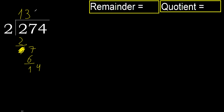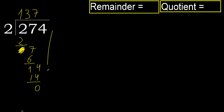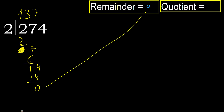14. 2 multiplied by 7 is 14. Ok, it is not greater. Subtract. Next, there is no remainder, therefore finish. Ok, 274 divided by 2 is 137.